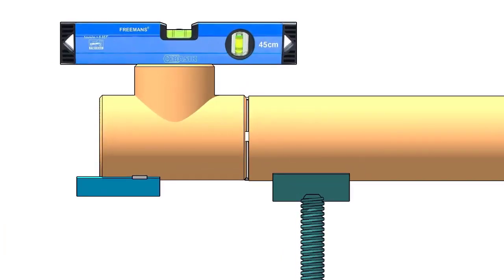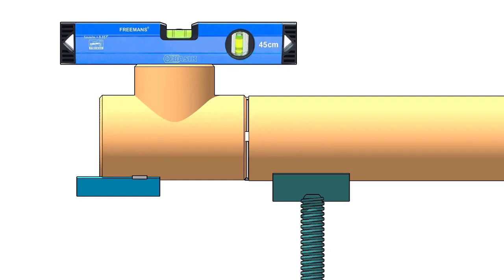The size of the angle cleat may vary according to the size of the elbow. Here I am using a 50-50 angle because the pipe diameter is 6-inch.